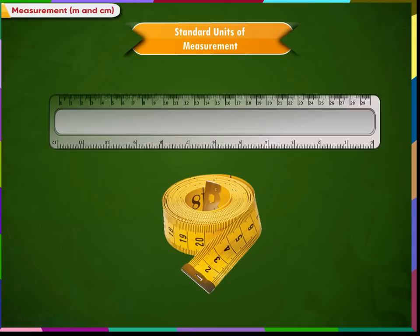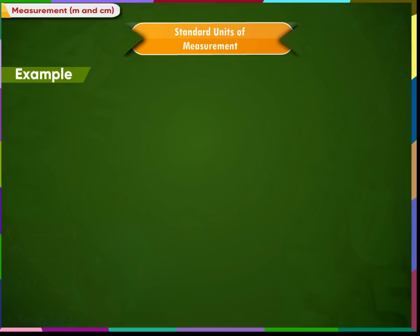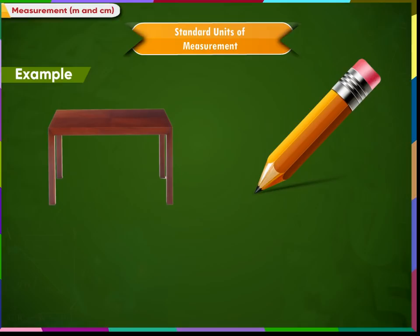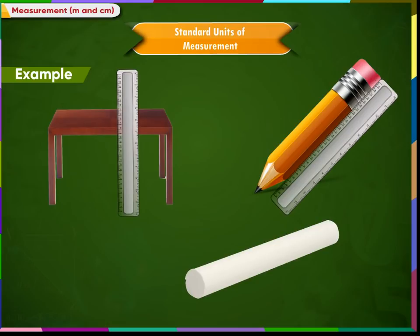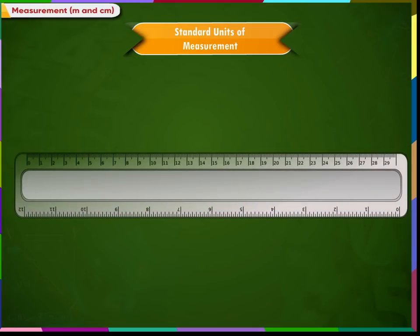We use different units of length to measure different lengths. For example, we measure the length of a table edge, length of chalk, length of a pencil, etc. in centimeter. Centimeter is a unit which is used to measure smaller lengths. In short, centimeter is written as cm. Look at this scale — it has two different measurements: the centimeter side and the inches side. Centimeter is a smaller unit than inches.